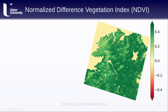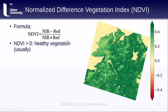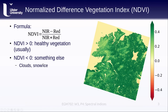Perhaps the most well-used example of a normalized difference index is the Normalized Difference Vegetation Index, or NDVI. This is calculated as the difference between the near-infrared reflectance and the red reflectance, divided by their sum. An NDVI value greater than zero typically means we're looking at healthy vegetation, while a value less than zero usually means we're looking at something else — for example, clouds, snow and ice, or soils.